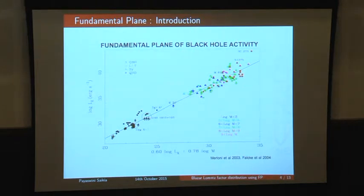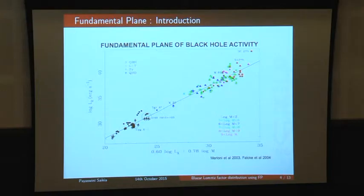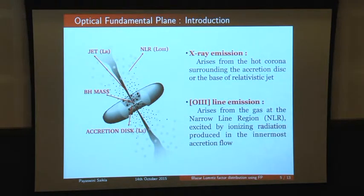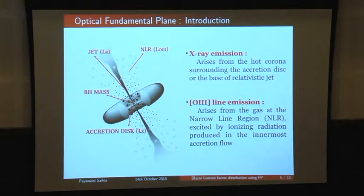The fundamental plane of black hole activity is a 3D plane stretched out by black holes of the complete mass range in the 3D space defined by radio luminosity, X-ray luminosity, and mass. Previously, people used X-ray emission to trace the accretion rate, which is useful as it comes from close to the black hole. But it would also be interesting to find the plane using the OIII line emission, because OIII lines come from the narrow-line region — far from the black hole, less beamed, and observable from the ground.